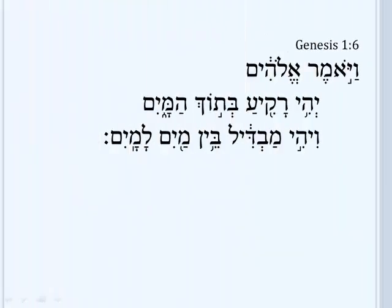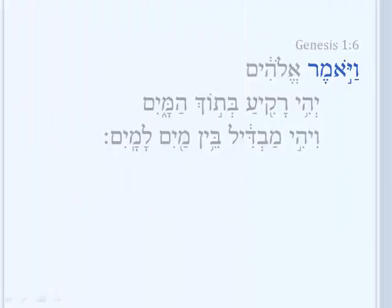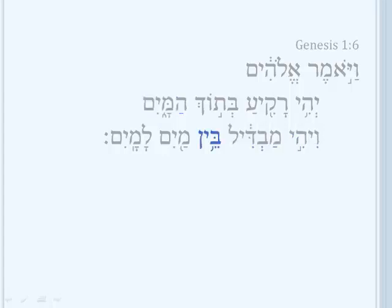Genesis 1:6: Vayomer Elohim, Yahi Rakiah Betoch Hamayim, Vihih Mavdil Bain Mayim Lamayim.